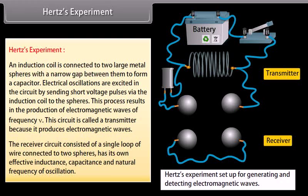The receiver circuit consisted of a single loop of wire connected to two spheres has its own effective inductance, capacitance and natural frequency of oscillation.